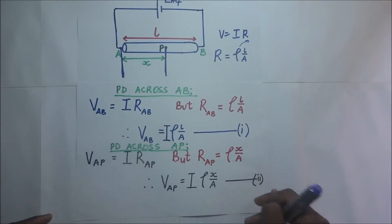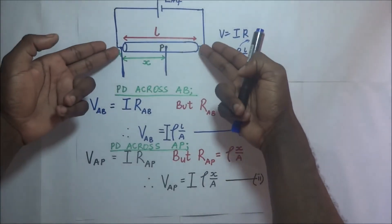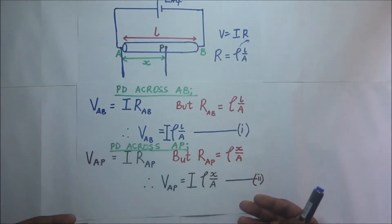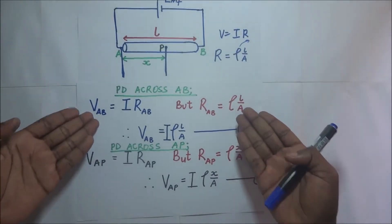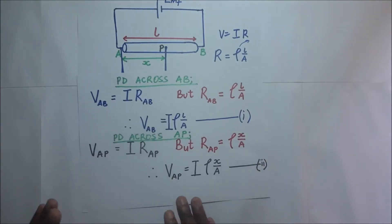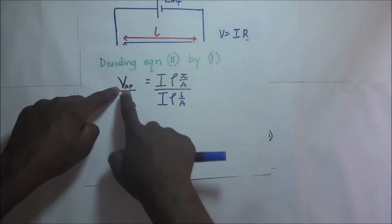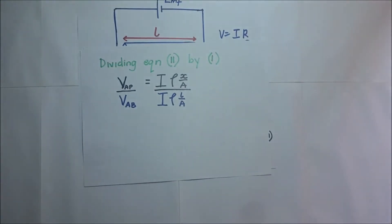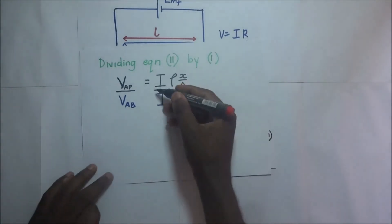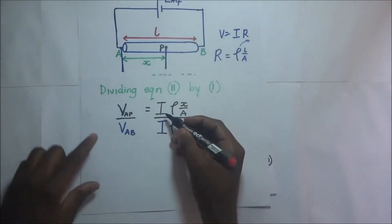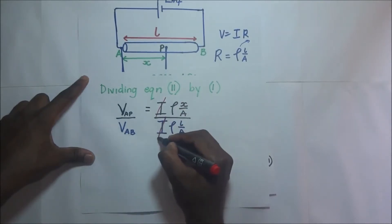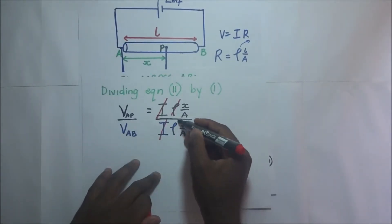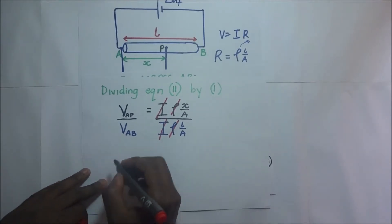Now we want to compare the potential difference across AB and the potential difference across AP. When we compare them, we simply divide the two equations. When we divide V_AP equals I times ρX/A by V_AB equals I times ρL/A, you will find that the current is the same — the same current is produced — so I and I cancel out. We are dealing with the same wire, so it has the same resistivity, meaning those will also cancel out.